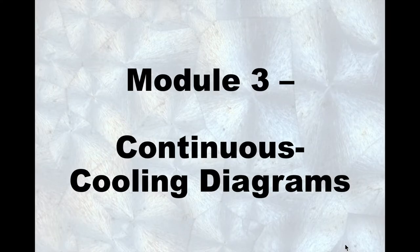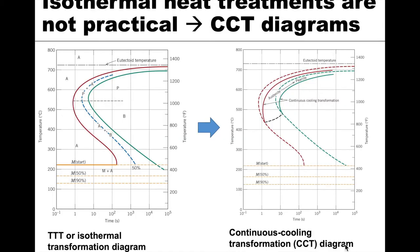In this module we're going to talk about continuous cooling diagrams, which are similar to isothermal transformation diagrams. In the real world, dealing with steel or other materials undergoing phase transformation, isothermal heat treatments are not always practical. Rapid quenches to a precise intermediate temperature with a precise hold time are not always possible, so instead we often deal with continuous cooling — basically a cooling rate diagram.